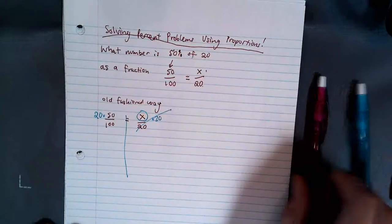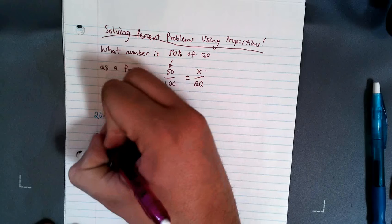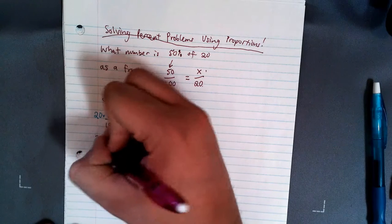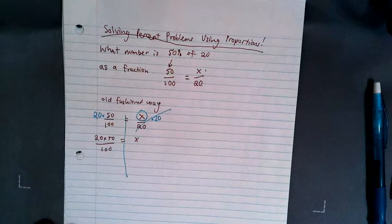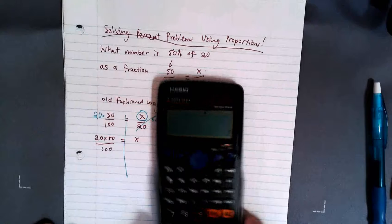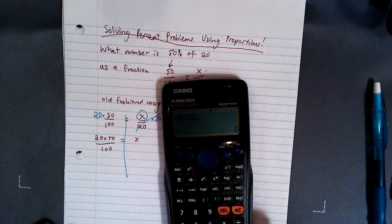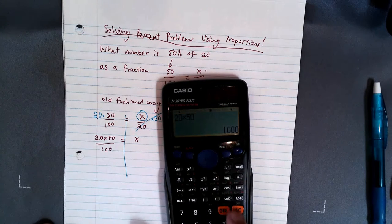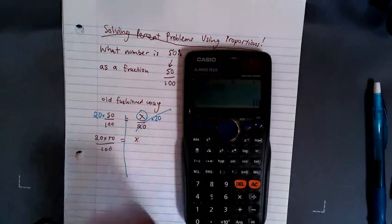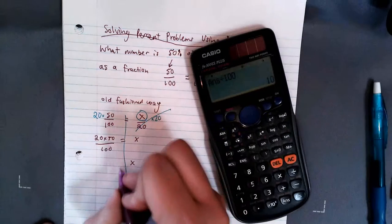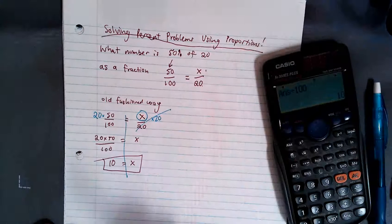Those will cancel out. We're left with x equals 20 times 50 over 100. You can grab your calculator. 20 times 50 equals something, divide by 100. Boom. 10. Right on. So you can carry that down. x equals 10. That's one way you can solve it. Old fashioned way. Nicely done.